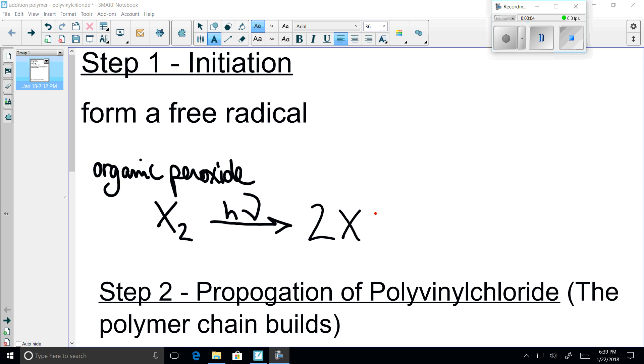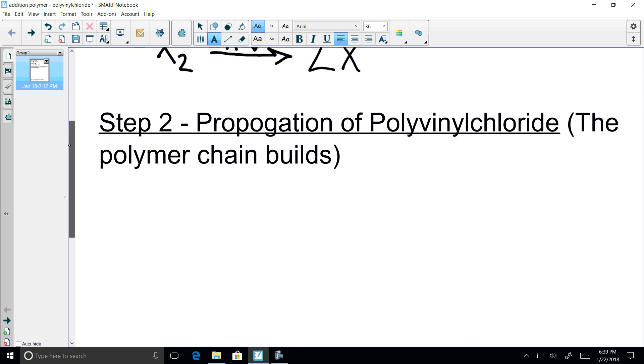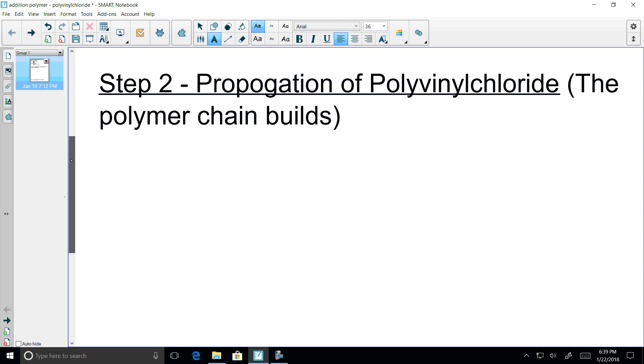This is the formation of polyvinyl chloride, an addition free radical polymer. Step one initiation to form the free radical is exactly the same as in other addition free radical polymers. The only difference occurs from step two onward when we begin to build a polymer chain, the propagation.